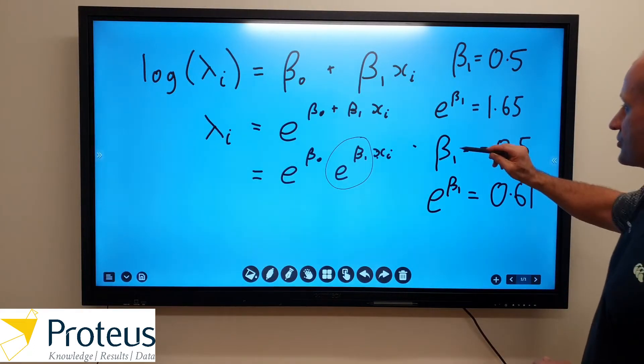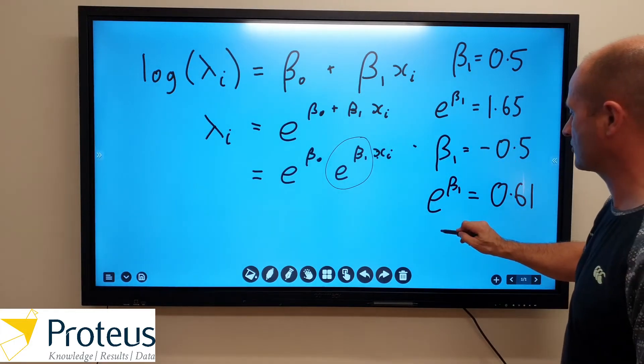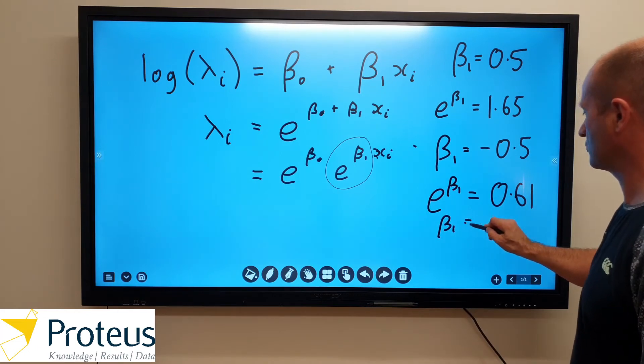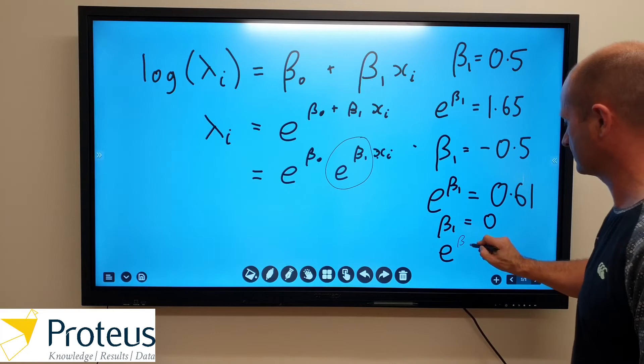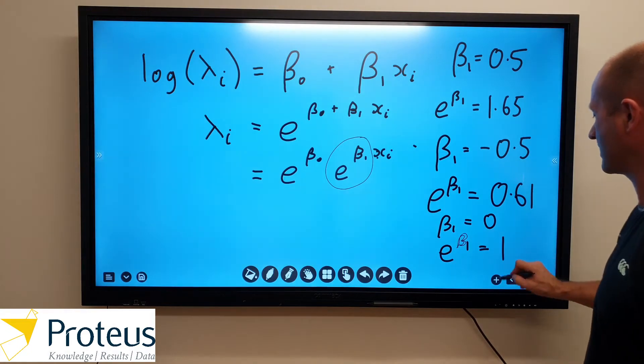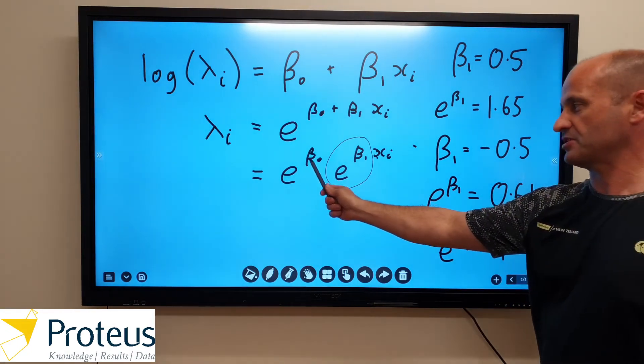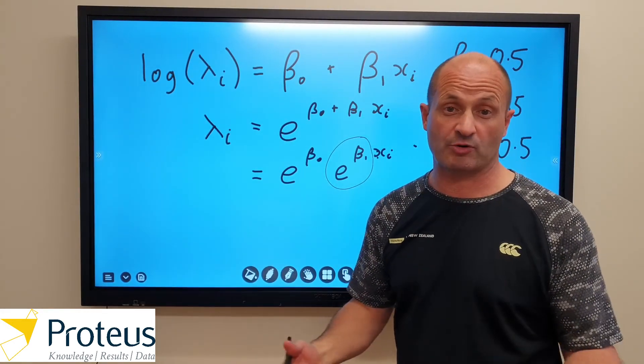And of course, if beta 1 equals 0, e to the beta 1 will equal 1. So it must be the original value times 1. So that means, of course, that that covariate has no effect.